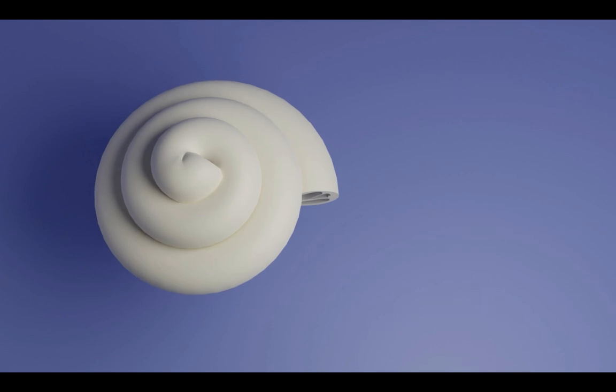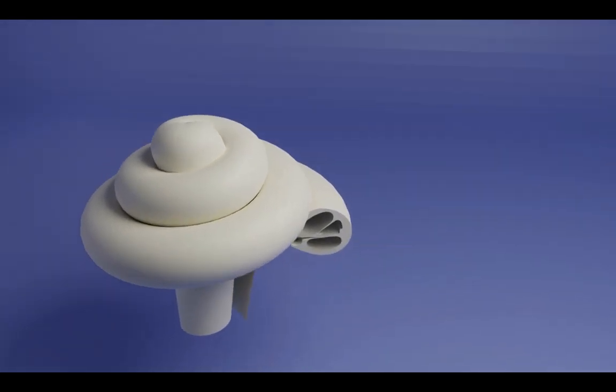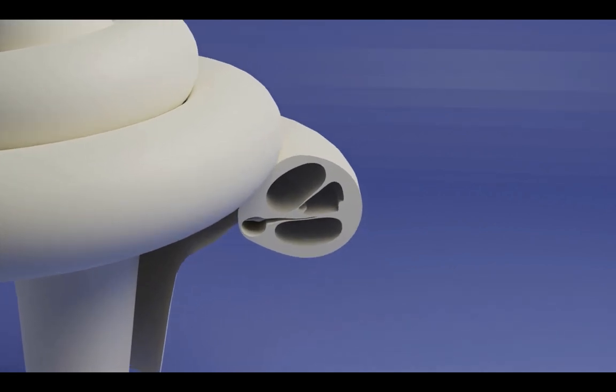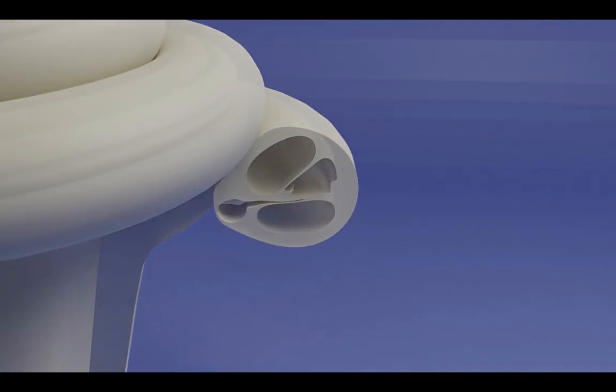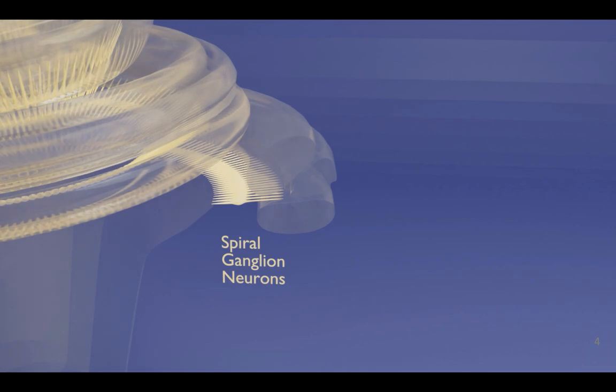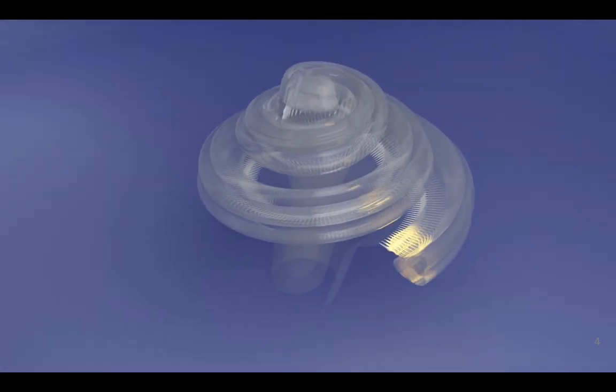You see here an animated representation of the organ of hearing, a tiny snail-shaped organ in the inner ear called cochlea. It channels the sound information to the spiral ganglion neurons, high frequencies at the base location and low frequencies at the apex.